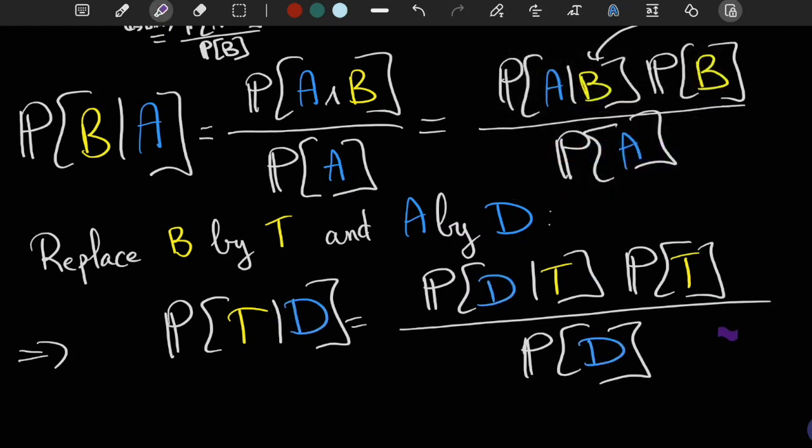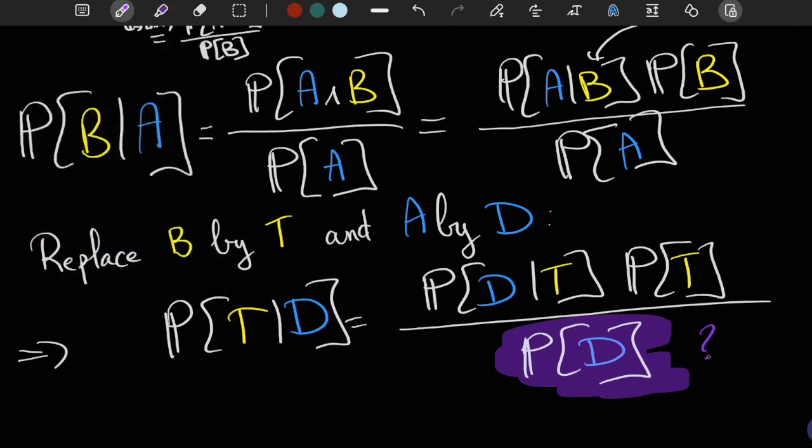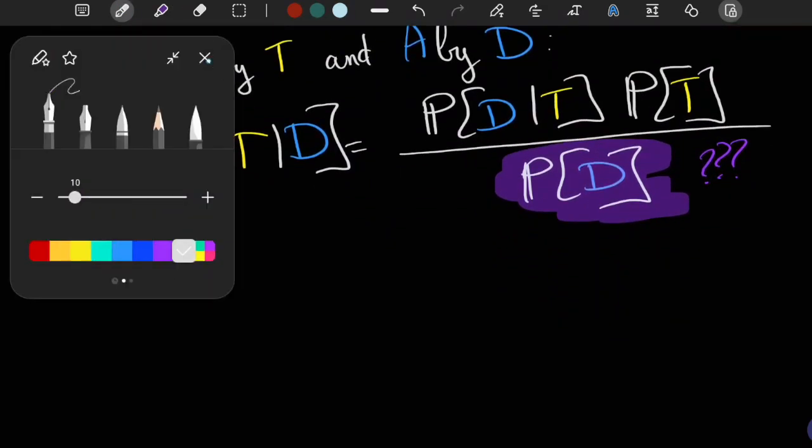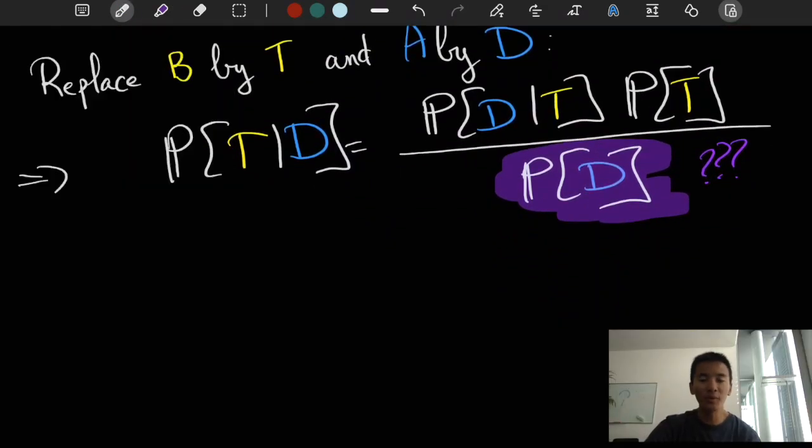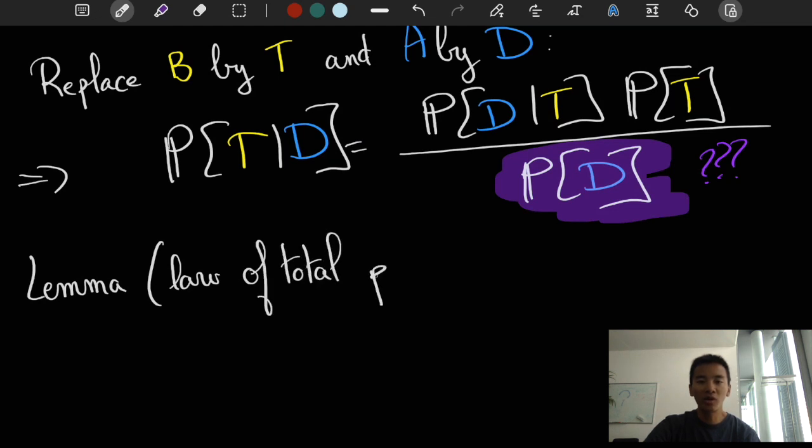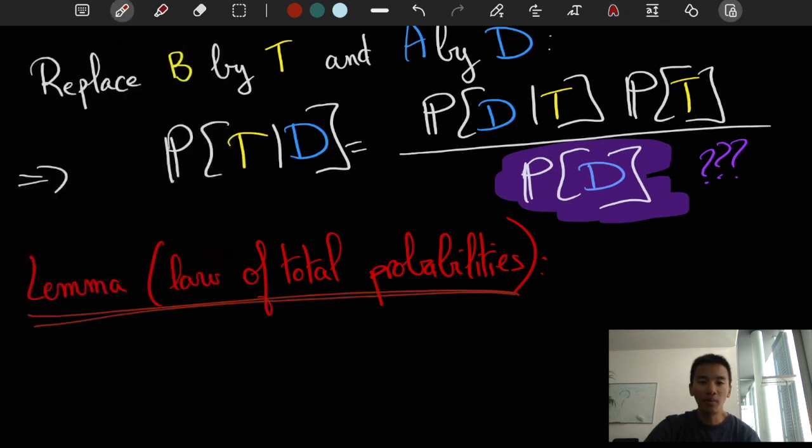We now need to detail how to compute probability of D. Yes, because intuitively, there's no absolute probability of D, or at least it is more naturally obtained as the combination of the predictions of different theories T. In particular, we can use a lemma called the law of total probabilities.